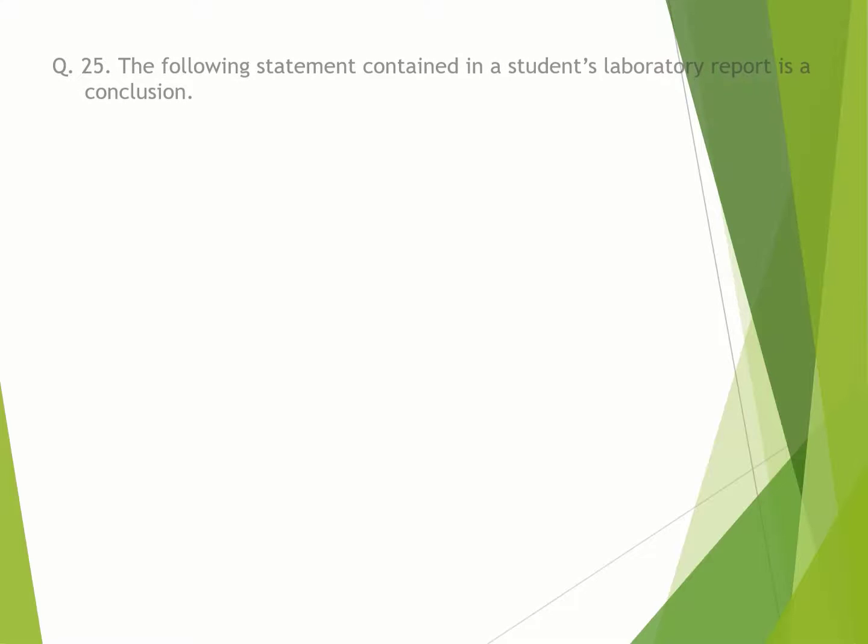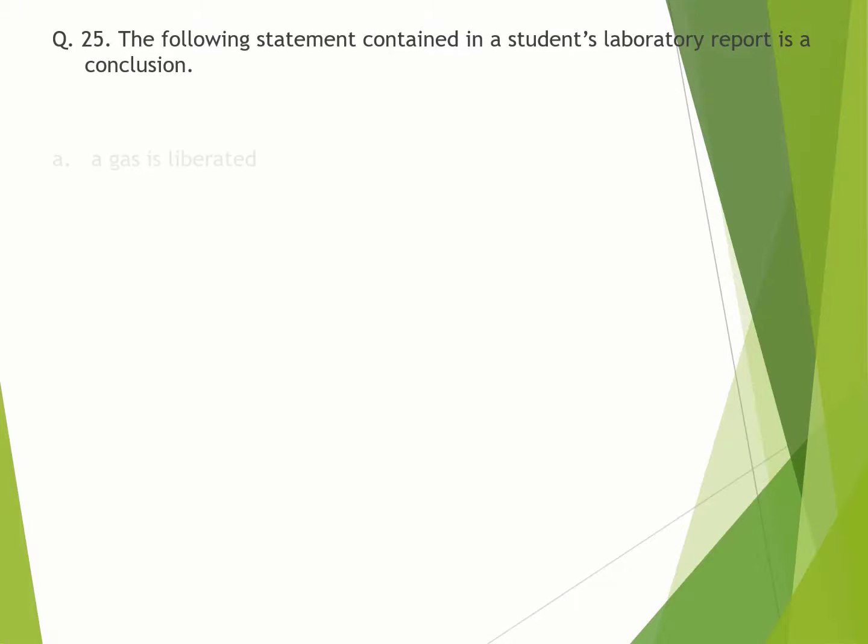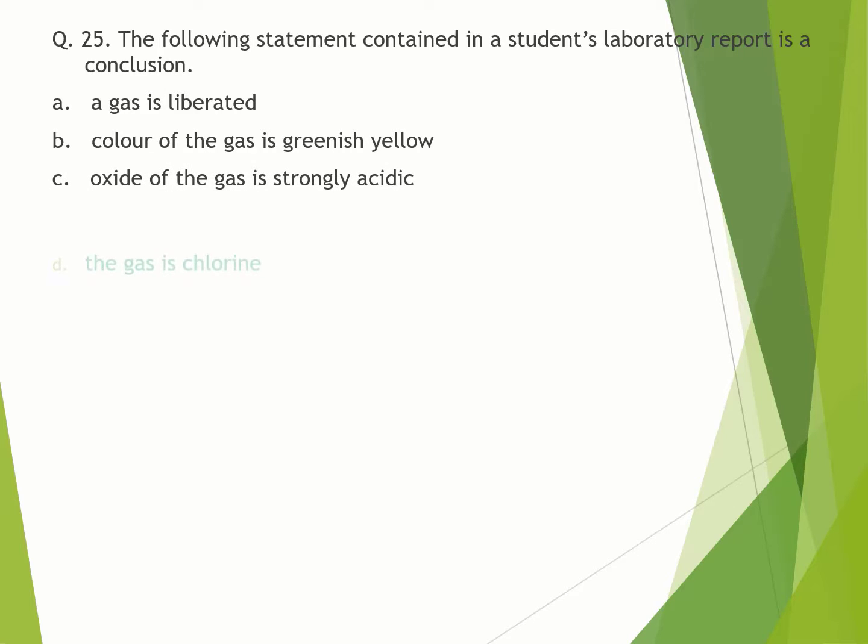Question number 25. The following statement contained in a student's laboratory report is a conclusion: A. a gas is liberated. B. color of the gas is greenish-yellow. C. oxide of the gas is strongly acidic. D. the gas is chlorine. Correct option is D.